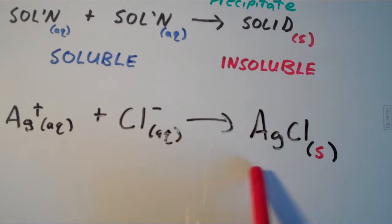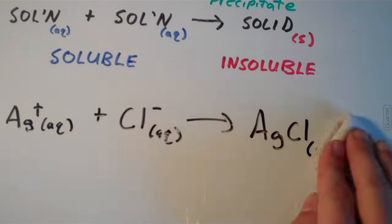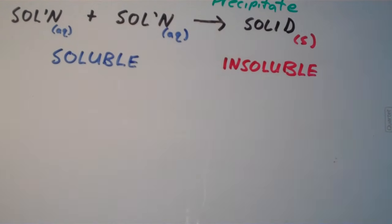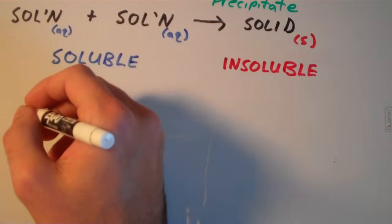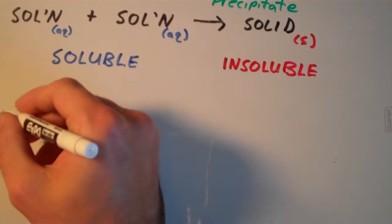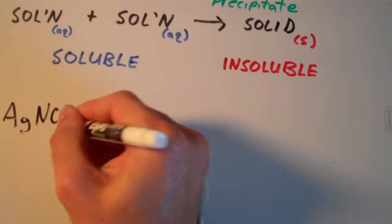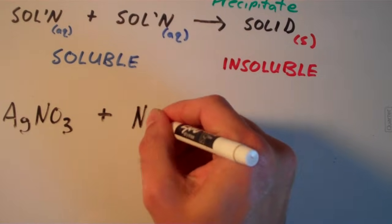That means AgCl did not dissolve in water like the ions did — that's an example of a simple precipitation reaction. Now we're going to move on to a more complex one, because it involves ionic compounds instead of just free ions. Suppose I have the following reactants: silver nitrate, AgNO3, and sodium bromide, NaBr. What are the products going to be?